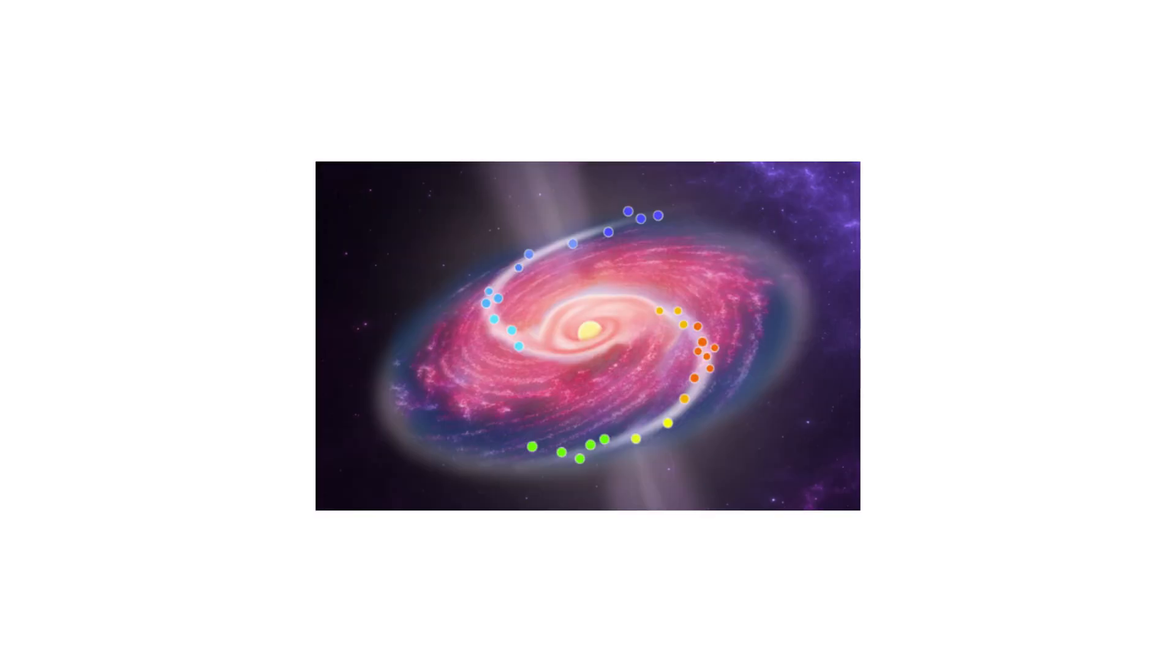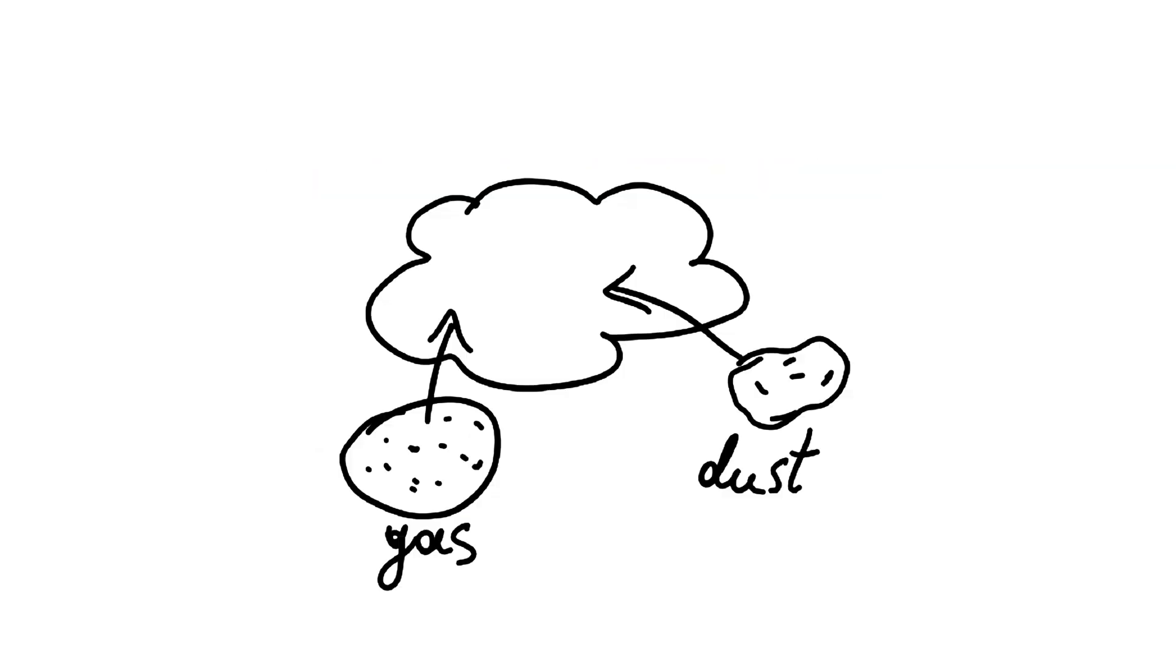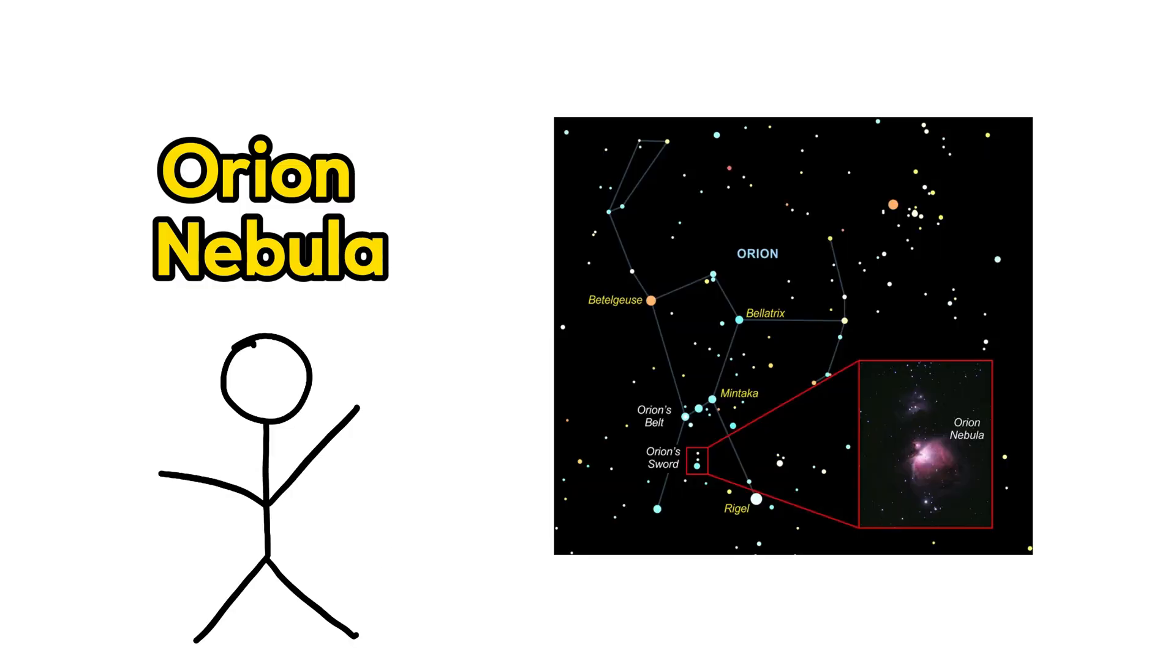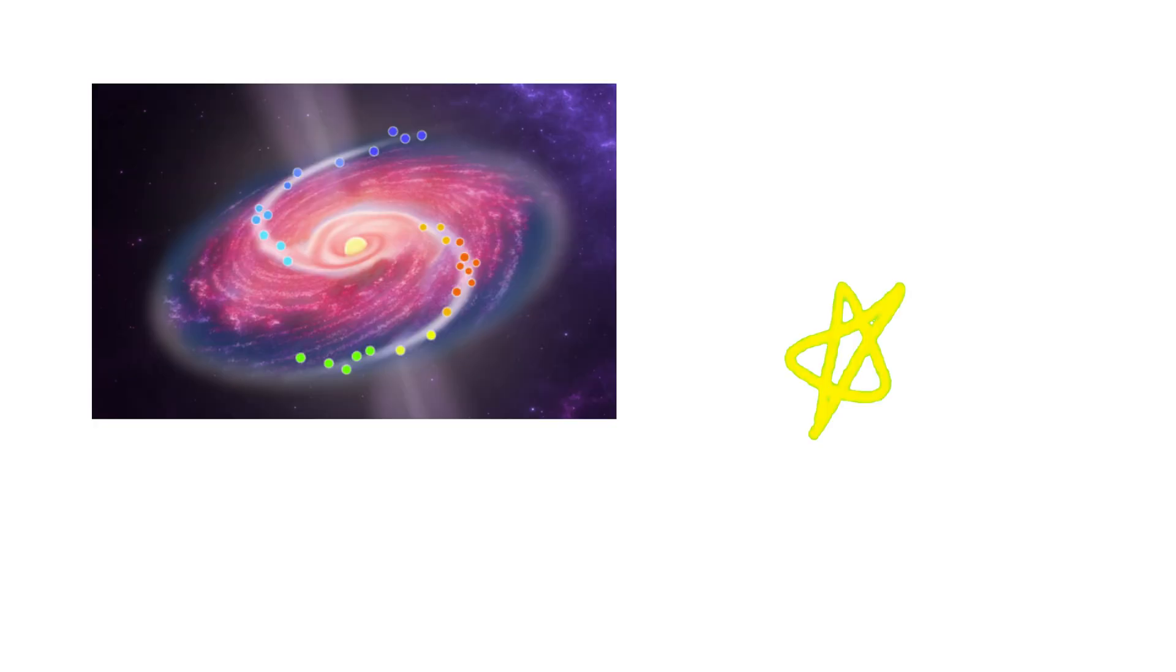Protostars are usually found in nebulae, which are vast clouds of gas and dust. One famous example is the Orion Nebula, where many new stars are being born right now. So, a protostar is basically a star in its earliest stage, getting ready to start its long life in the universe.